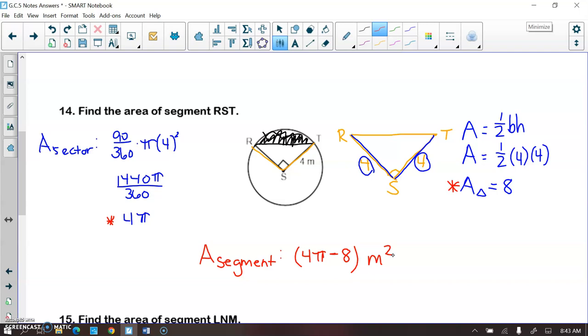If I wanted the rounded version, you would just type in 4 pi minus 8 into your calculator and then let's round to the nearest hundredth here. 4.57 meters squared would be the area rounded to the nearest hundredth.